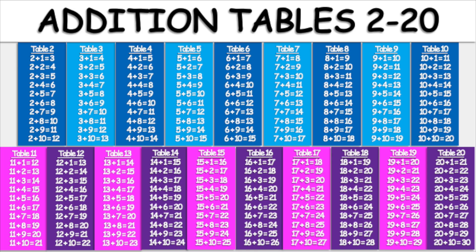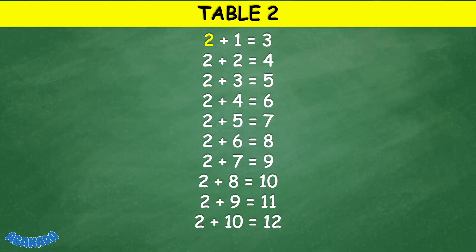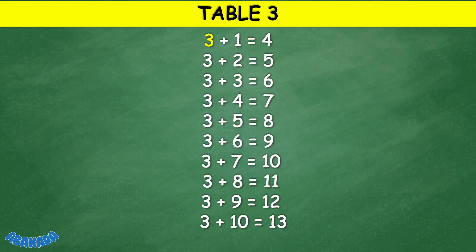Addition tables 2 to 20. Table 2: 2 plus 1 equals 3, 2 plus 2 equals 4, 2 plus 3 equals 5, 2 plus 4 equals 6, 2 plus 5 equals 7, 2 plus 6 equals 8, 2 plus 7 equals 9, 2 plus 8 equals 10, 2 plus 9 equals 11, 2 plus 10 equals 12.